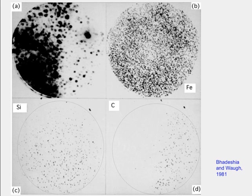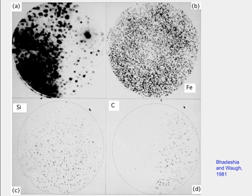We have understood that bainite has a shape deformation and is therefore a displacive transformation. However, there is still a query: bainite forms at around 400–500°C where carbon is extremely mobile. It is possible that you get a displacive transformation but carbon moves about because it is an interstitial and does not influence the crystallography — the shape change is a consequence of the iron atom crystallography. So we need to think about whether it is a truly diffusionless transformation like martensite, or whether carbon partitions between the parent and product phases during transformation.